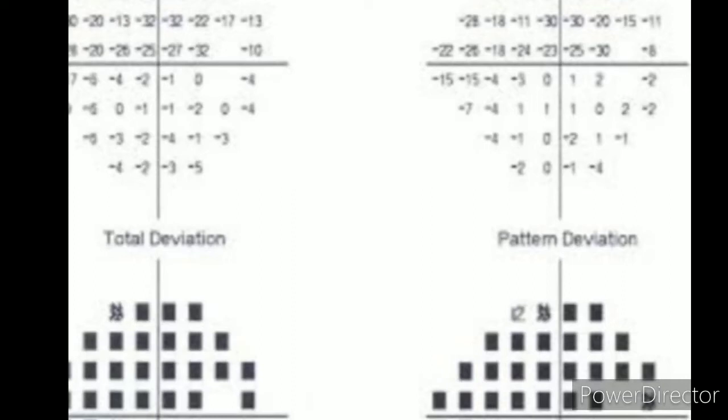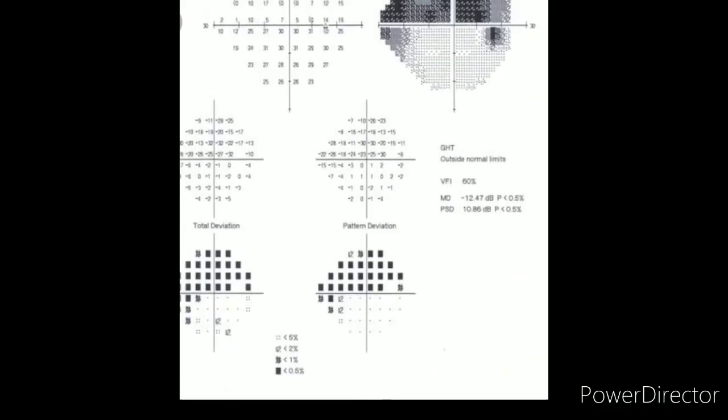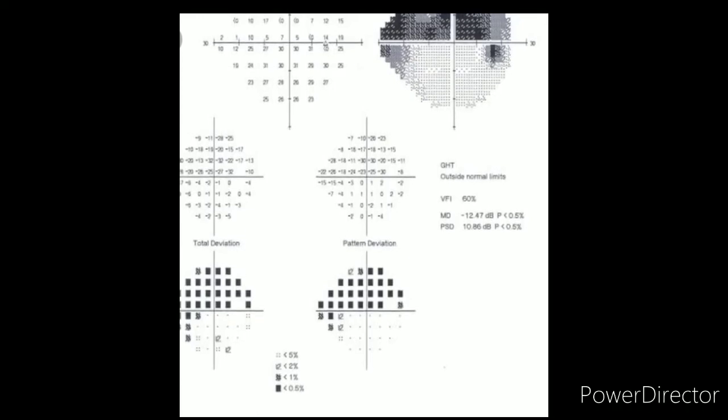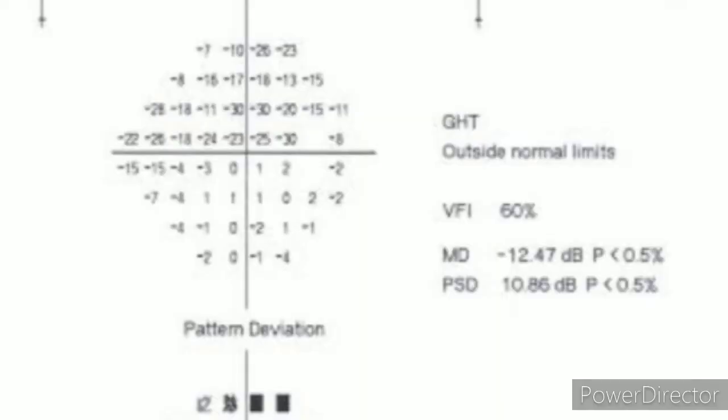Now comes to the global indices: mean deviation, pattern standard deviation, and visual fields index. Now visual field index is the measure of the patient's overall visual field function expressed as a percentage. Normal age-adjusted value is 100 percent. Zero degrees means perimetric blind field. 50 percent means half of the fields are lost. It is nowadays used to monitor progression and assessment of the field defects in glaucoma. It is less susceptible than the mean deviation to the effects of cataracts and other media opacities.